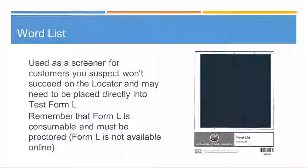The Level L test is only available as a paper-pencil version and is consumable — it must be proctored. If during intake you suspect a customer has a low literacy level, it is recommended to give the Level L word list test as a guide to placement at that level. The word list is included with the purchase of the Level L test, and you don't want to give the locator to a low-literacy student and make them feel like a failure. Instructions are on page 17 of the TABE 11 and 12 test directions book.